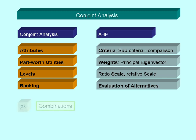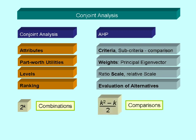Now, in a conjoint analysis with a full factorial design, 2 to the power of k combinations have to be ranked. In AHP we need only k squared minus k over 2 pairwise comparisons. For example, with 4 attributes or criteria, there are 16 combinations to be ranked in conjoint analysis, but only 6 pairwise comparisons in AHP.